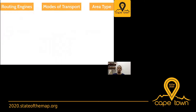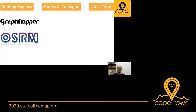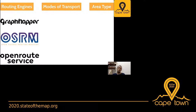So how would I like to do the experiment? First, I'm choosing the routing engines I'm going to test. GraphHopper and OSRM are pretty obvious choices because both of these routing engines are available on the main OpenStreetMap website. And I'd like to add OpenRouteService as well as a comparison and alternative to test.